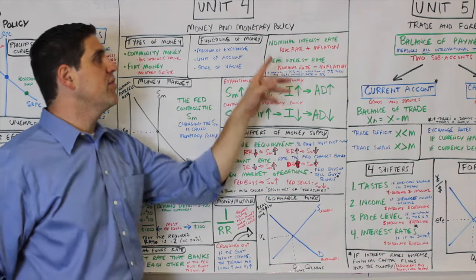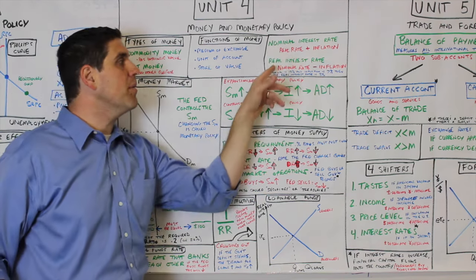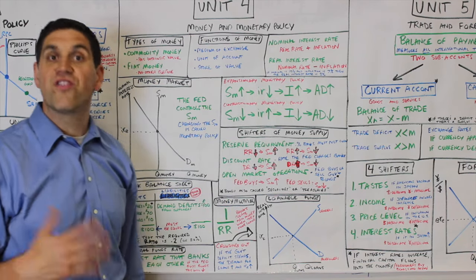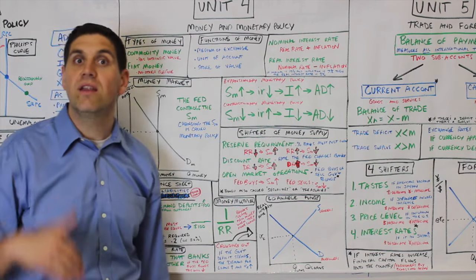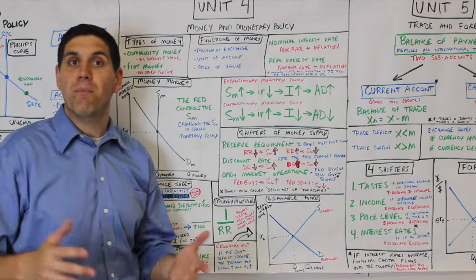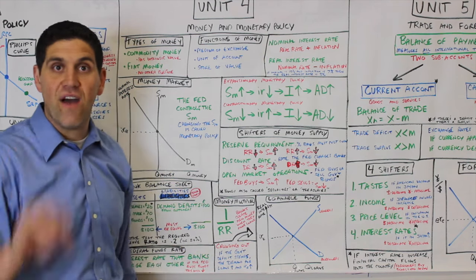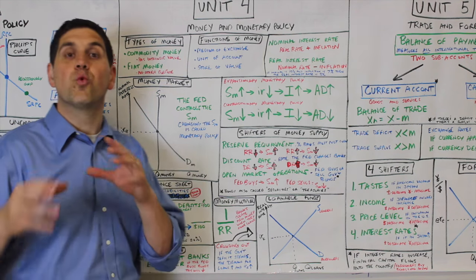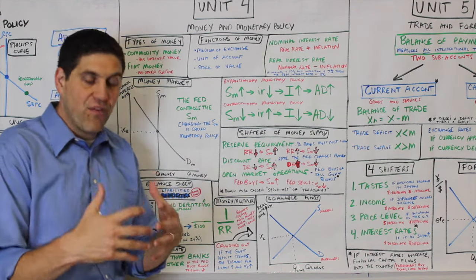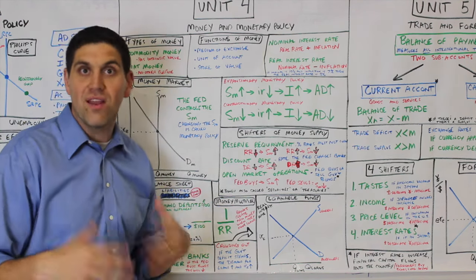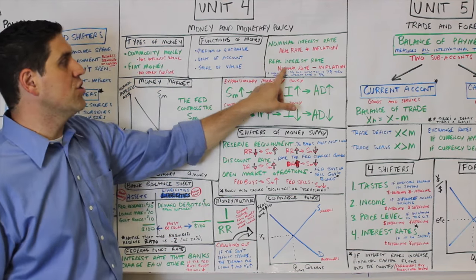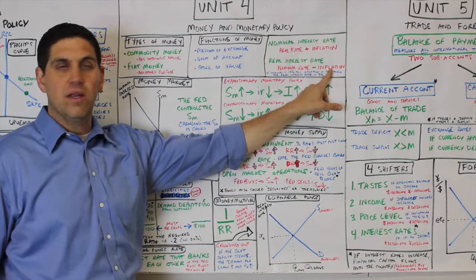Let's talk about interest rates. There's a difference between nominal and real interest rates. If there's 5% inflation and you charge someone a 5% nominal interest rate, when you get paid back you don't actually get 5% — the real interest rate is only zero because the inflation has eroded that interest rate. The real interest rate is your nominal minus inflation.